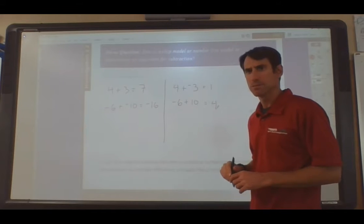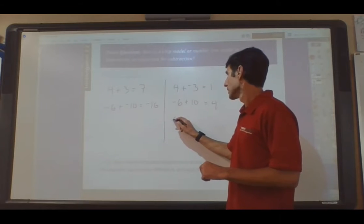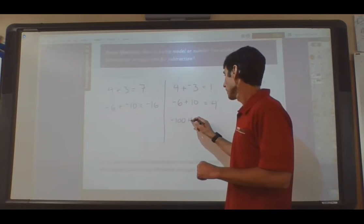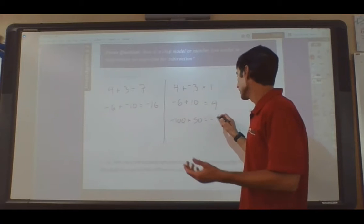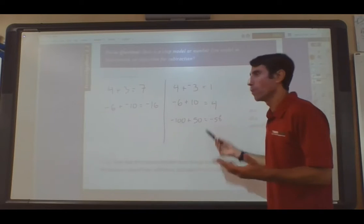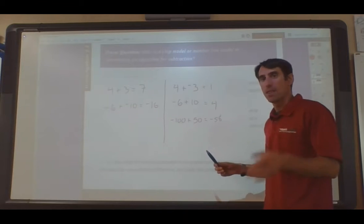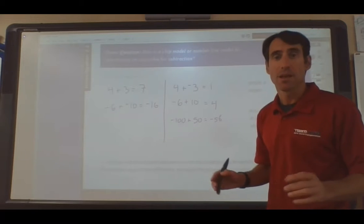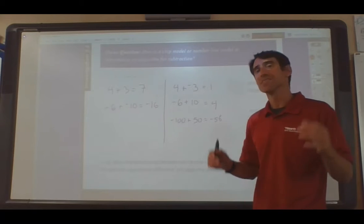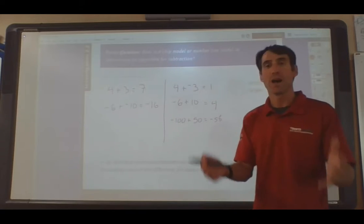Is it always positive? Let's try another one, just to make sure. Let's say we have negative 100 plus 50. Well, that answer is negative 50. So, what is the algorithm that we came up with? Well, we discovered that when you're adding two values that have different signs, then the result will have the same sign as the number that has the larger absolute value.